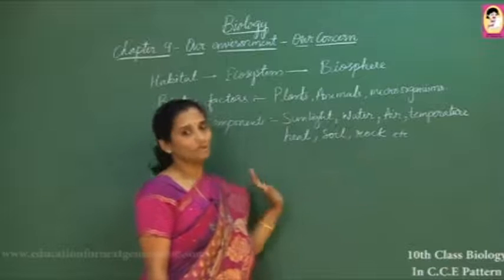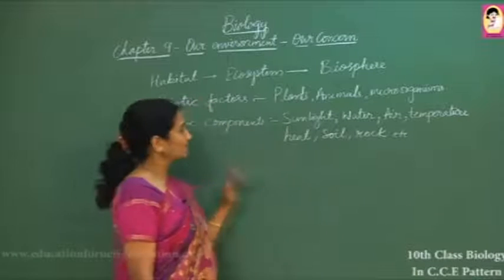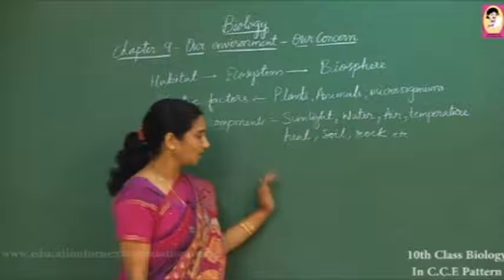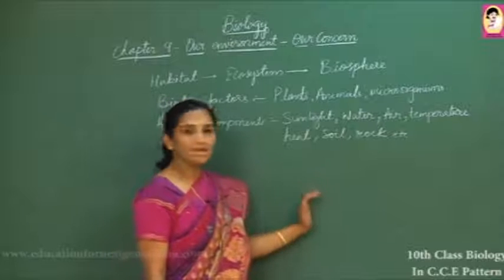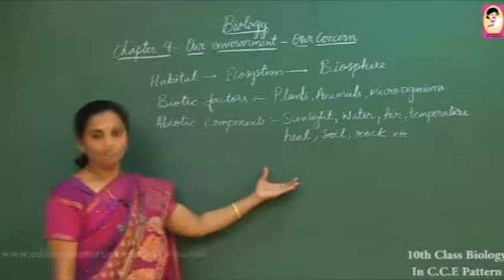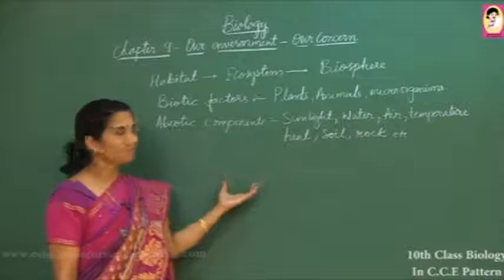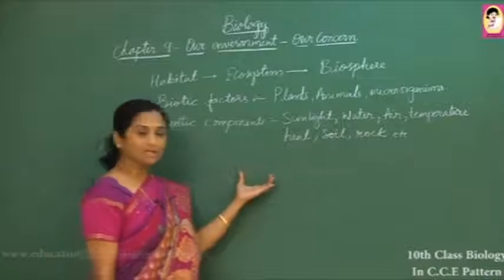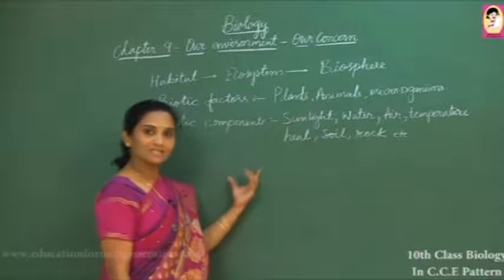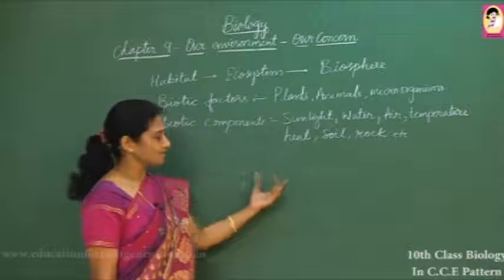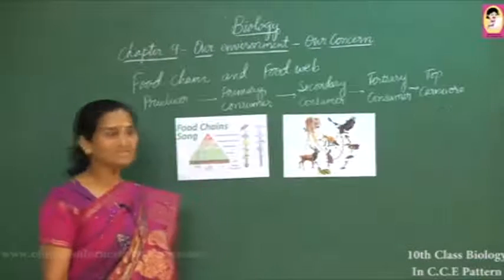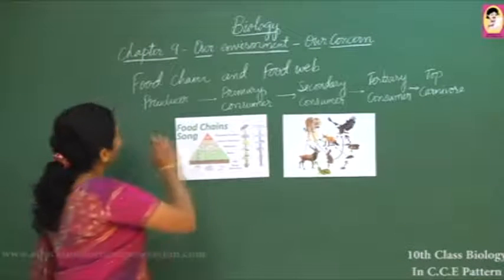Interdependency takes place between abiotic and biotic components in an environment. We are going to see how one animal depends on another, and how they develop a food chain and a food web — where we find both interspecies and intraspecies interactions simultaneously.